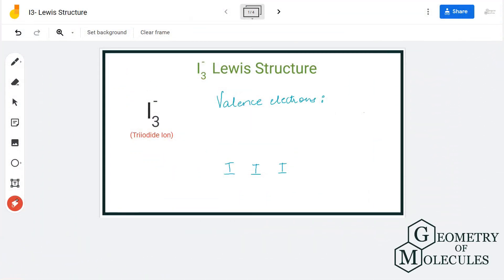Hi guys, today in this video we're going to look at the Lewis structure for triiodide ion. It has a chemical formula of I3 minus. The minus charge represents a negative charge this ion has because of accepting one additional electron.